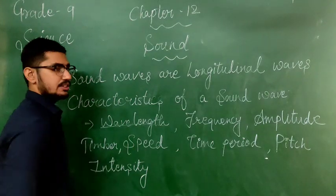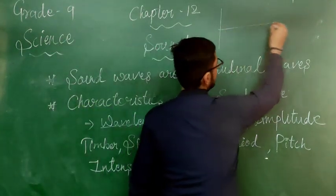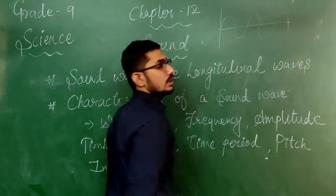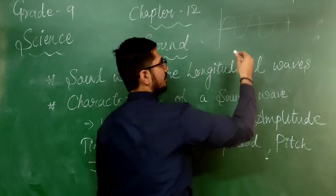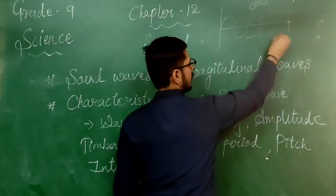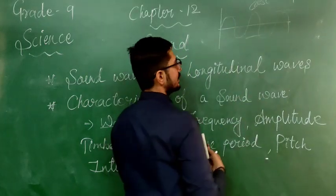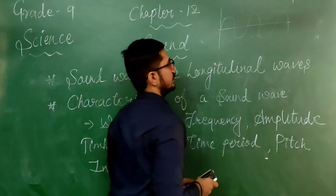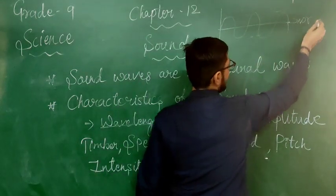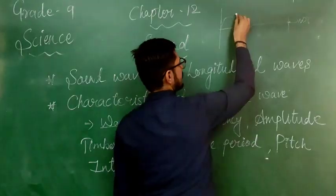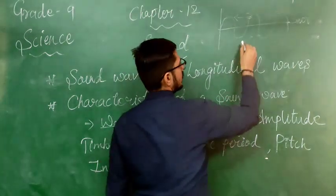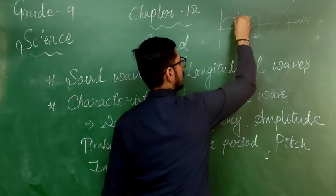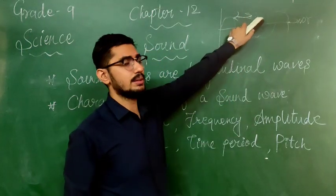Let us see what wavelength is. I am drawing a sound wave on a graph — it will look something like this. The upper part of the graph is known as the crest, and the lower side is the trough. The center line is known as the normal. The distance between two successive crests, or the distance between two successive troughs, is known as wavelength.